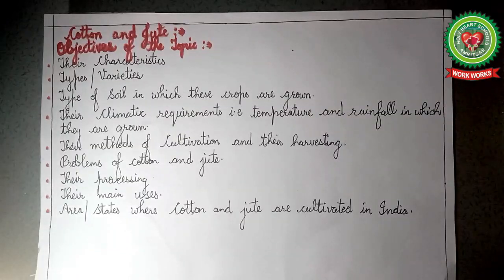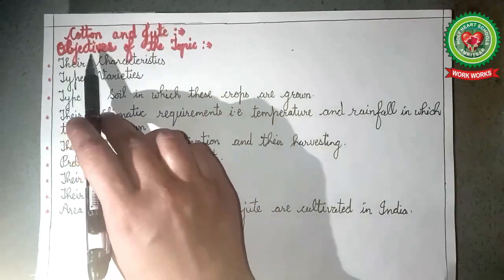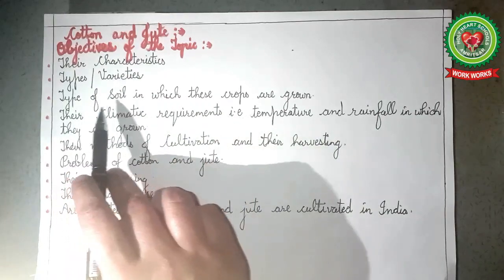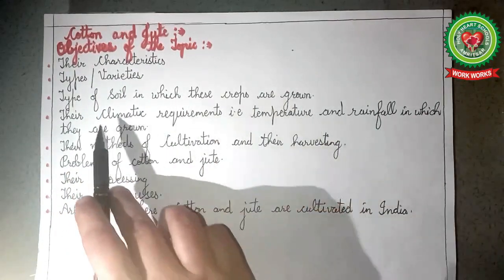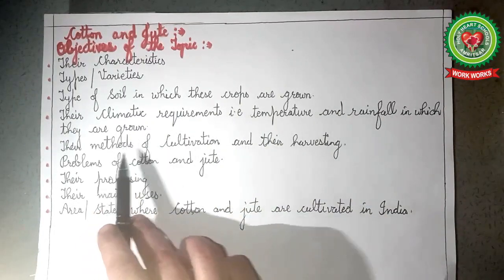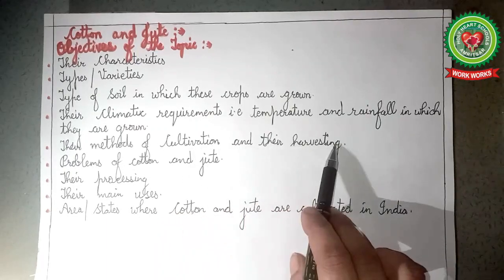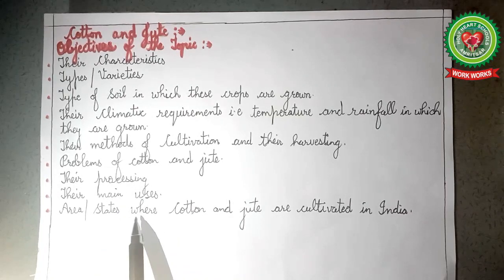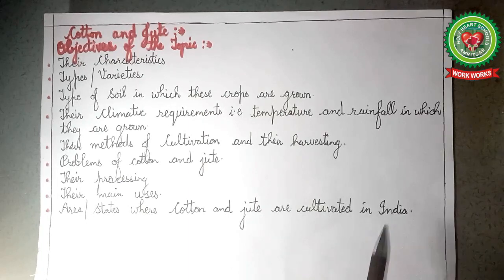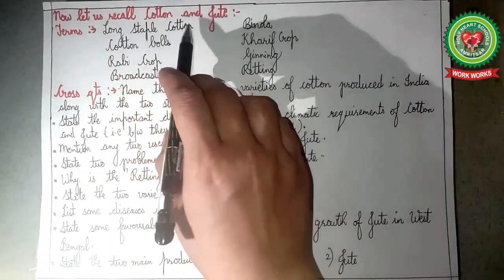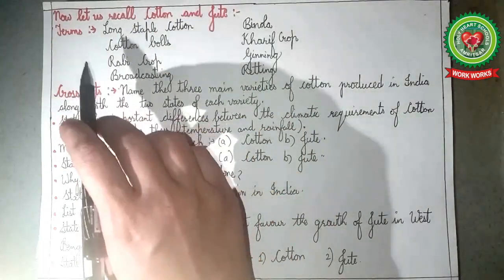In the previous videos you have studied two major cash crops — cotton and jute — with the following objectives: their characteristics, types and varieties, type of soil in which these crops are grown, climatic requirements including temperature and rainfall, methods of cultivation, harvesting, problems, processing, main uses, and area states where cotton and jute are cultivated in India. So children, before proceeding with the next crop, let us recall cotton and jute with the following terms and cross questions.